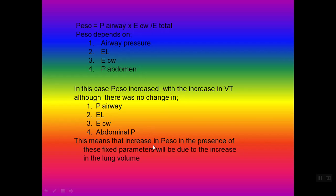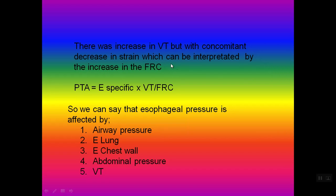This means that the increase in oesophageal pressure, in the presence of these fixed parameters, is due to an increase in lung volume. The second point: there was an increase in tidal volume but with a concomitant decrease in strain. Coming to the formula, strain equals a specific constant (approximately 13) multiplied by the tidal volume over functional residual capacity (FRC). A decreasing strain means that FRC must be increasing. So there was an increase in tidal volume with a concomitant increase in FRC, which is why the strain was decreasing. We can conclude that oesophageal pressure is affected by airway pressure, lung compliance, chest wall compliance, abdominal pressure, and tidal volume.